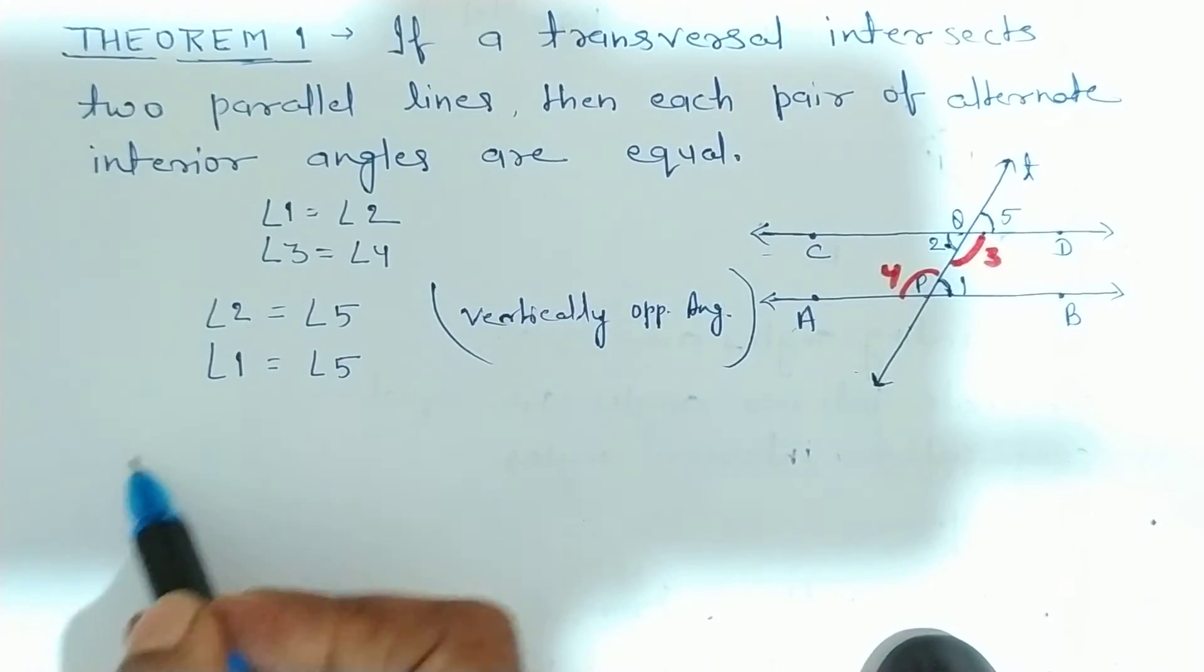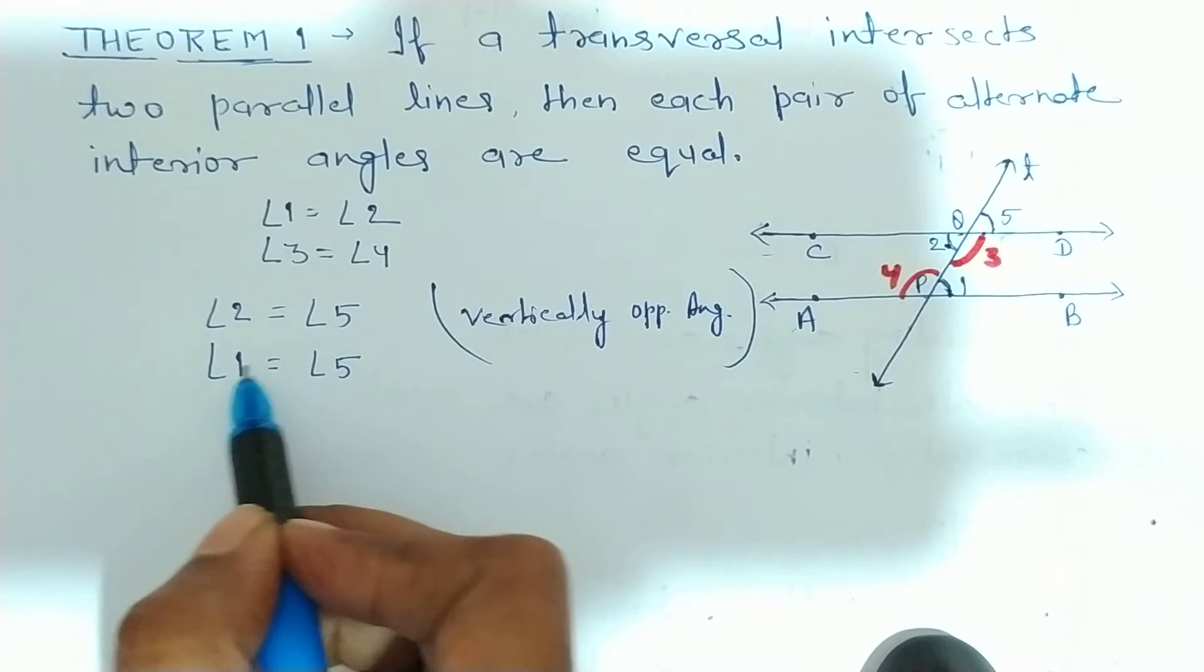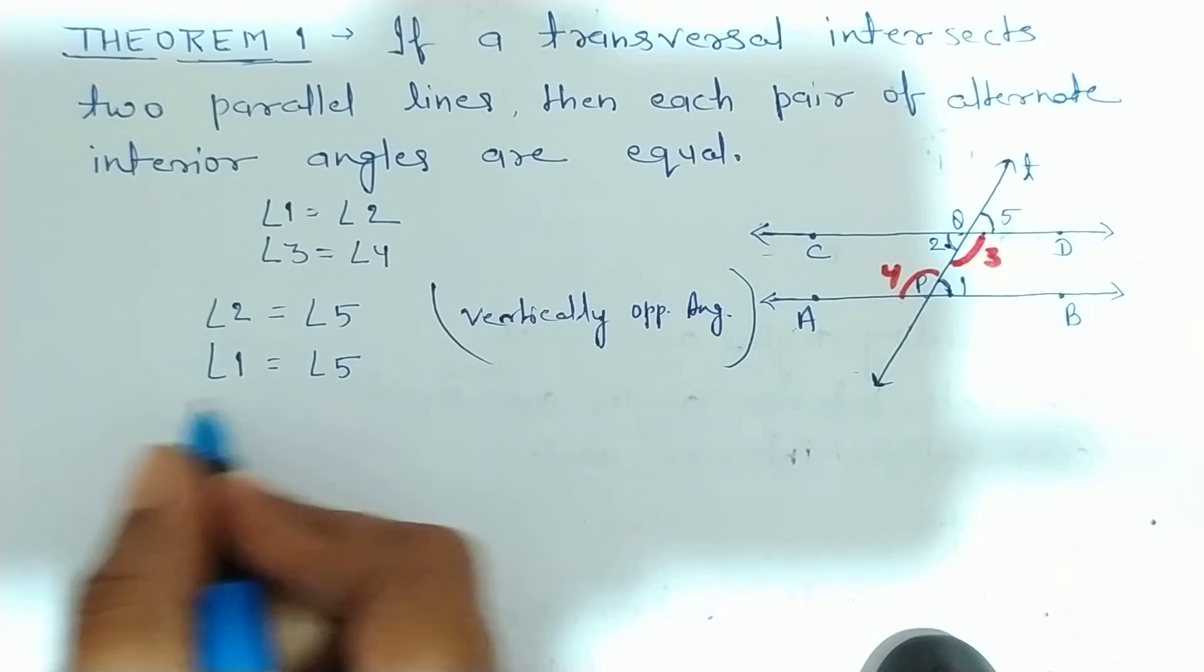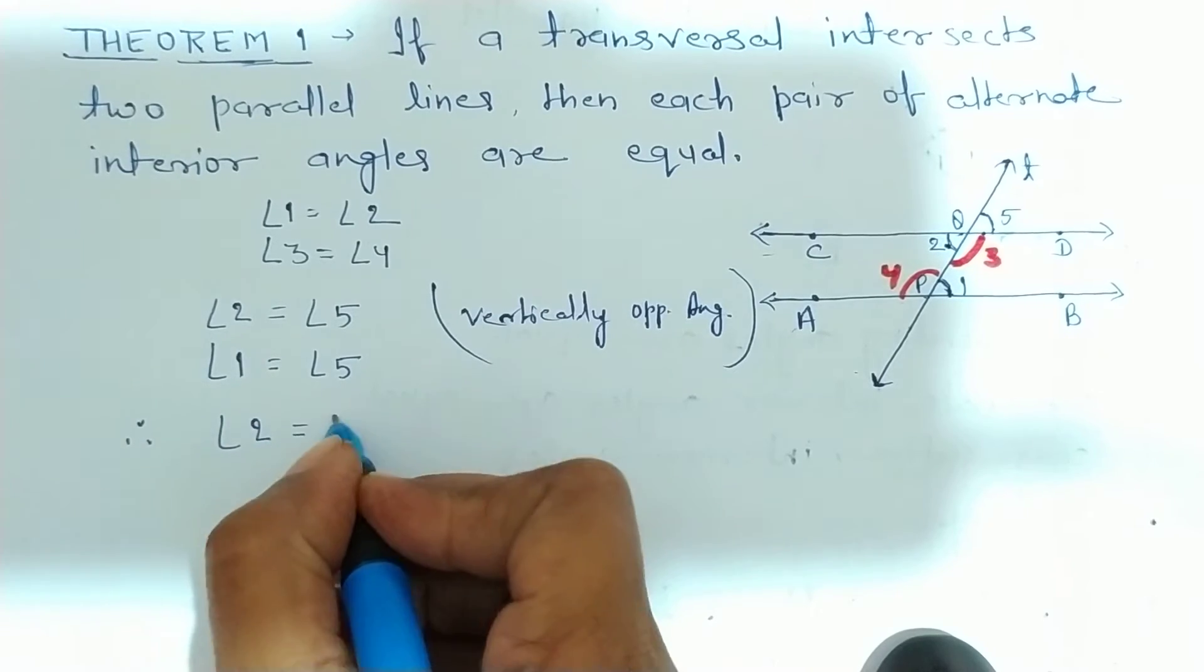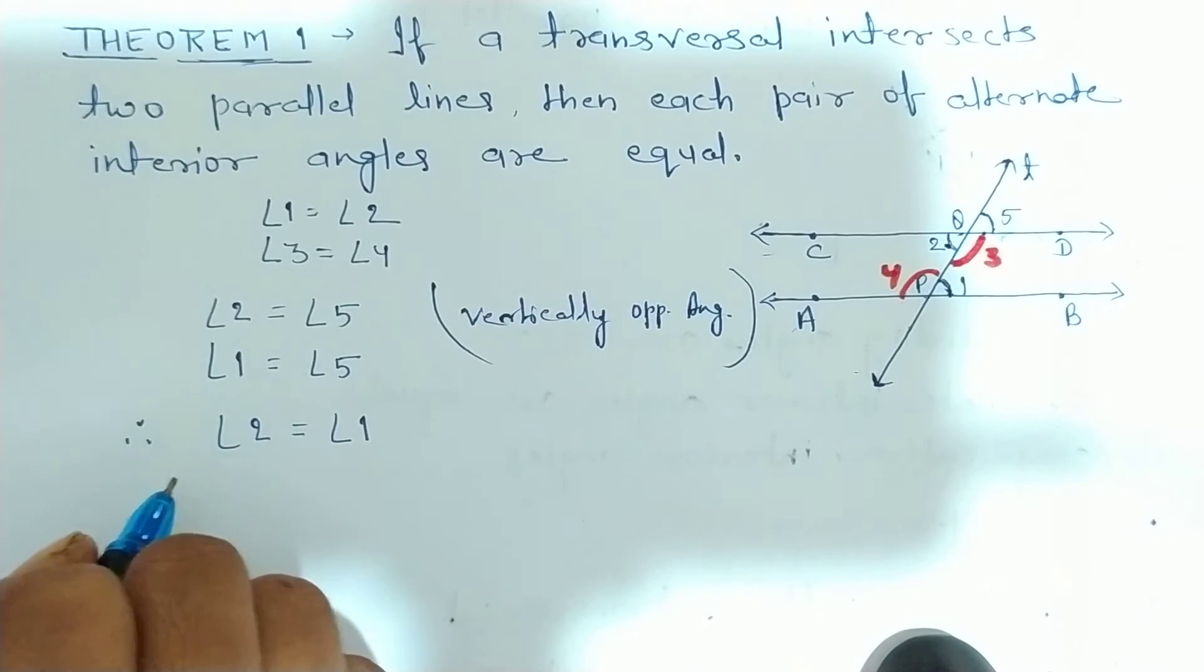Ab aap dekho, angle 2 bhi 5 ke equal hai aur angle 1 bhi 5 ke equal hai. Therefore, angle 2 equal to angle 1. Clear?